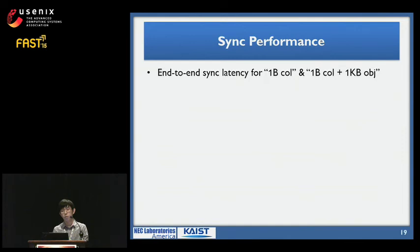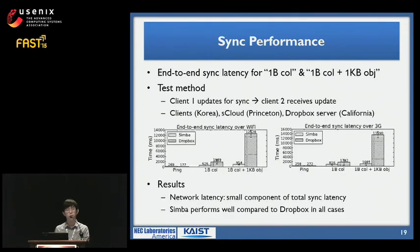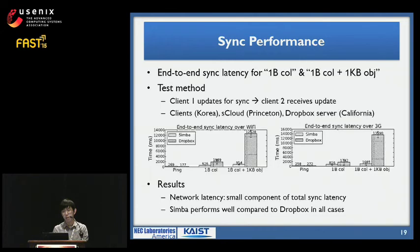We also confirmed that Simba performs comparably to existing sync services. We compared Simba's end-to-end sync performance to Dropbox while syncing a one-byte column or one-byte column with one-kilobyte object. We measured the time for one client to write new data and have client two receive the update. Clients were in Korea while Simba Cloud was in Princeton and Dropbox server in California. Overall, network latency consists of only a small component of sync latency, and Simba performs comparably to Dropbox in all cases.